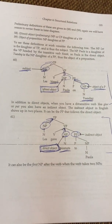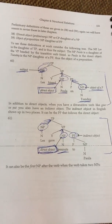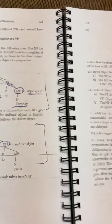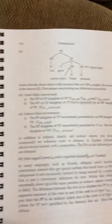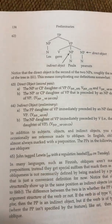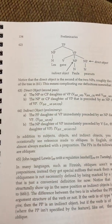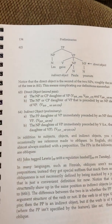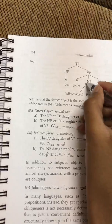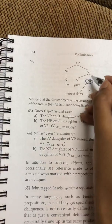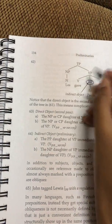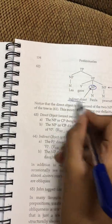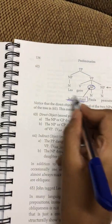It can also be the first noun phrase after the verb when the verb takes two noun phrases. When a verb takes two noun phrases, the first noun phrase that is the daughter of the verb phrase is the indirect object.